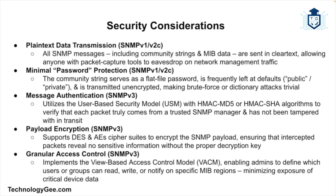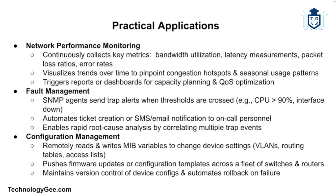SNMP version 3 addresses these concerns by implementing three key features. First, authentication ensures that messages are from a legitimate source and have not been tampered with. Second, encryption protects the privacy of SNMP messages and prevents unauthorized access. Third, access control manages permissions for different users, restricting access to sensitive information.